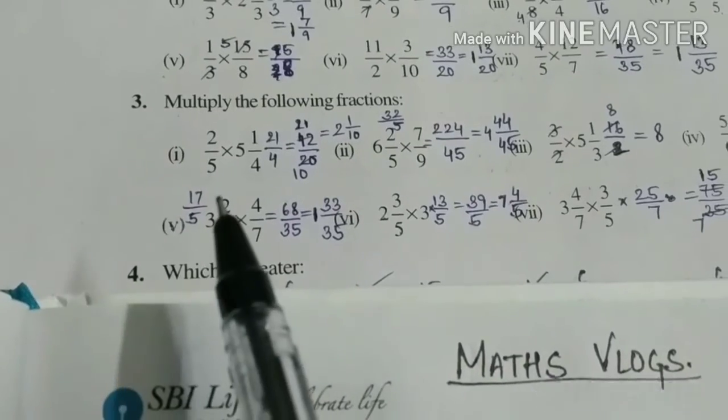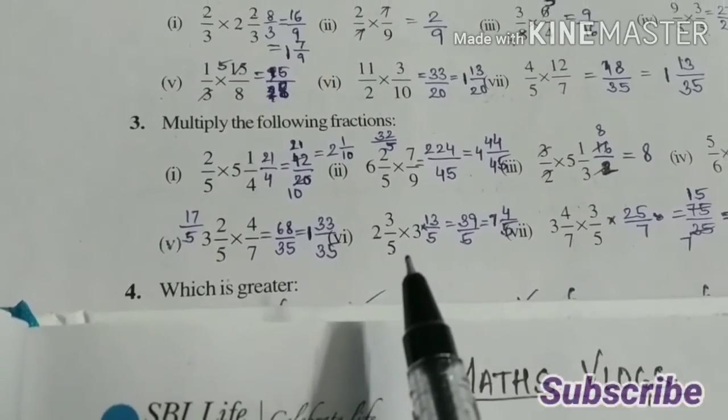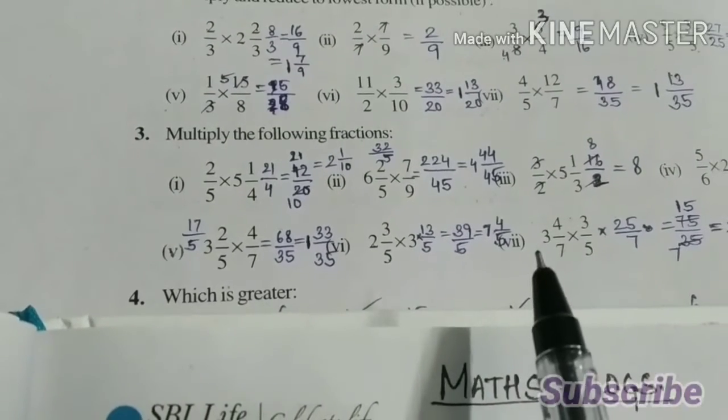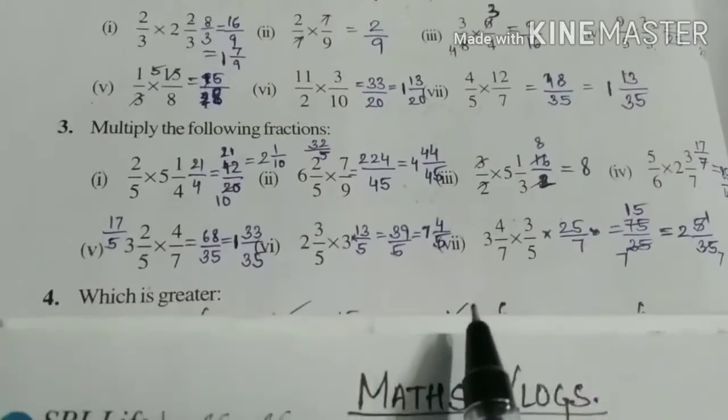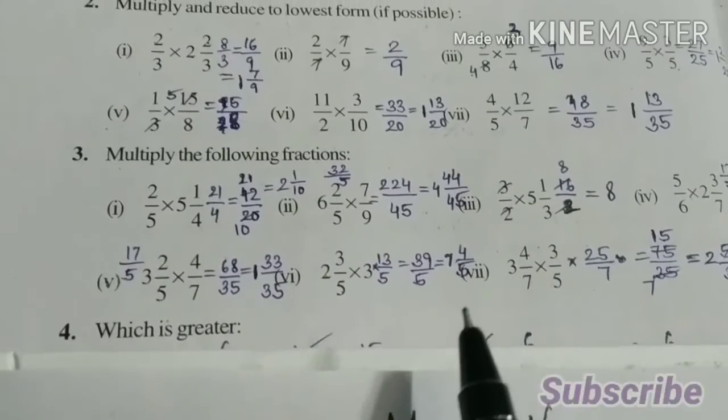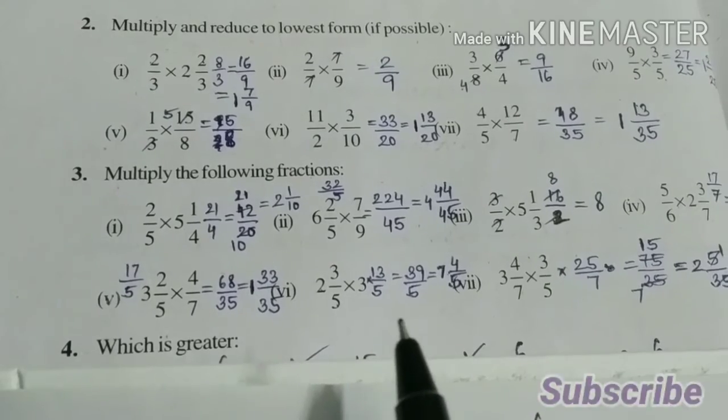5th: 3 2 by 5 into 4 by 7, 3 by 5 into 3 4 by 7 into 3 by 5. 3 more are there. I think you can solve it. And if you have any doubt then ask in the comment box.